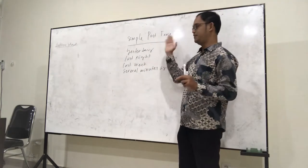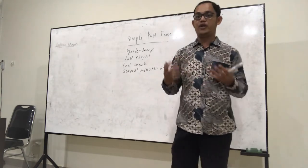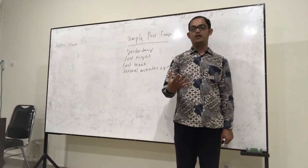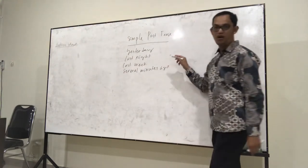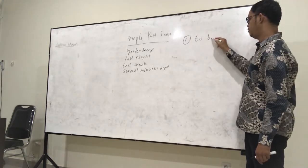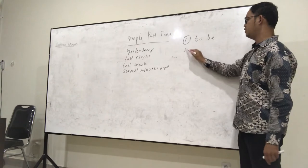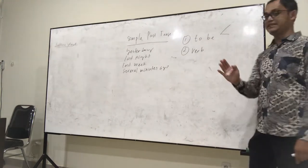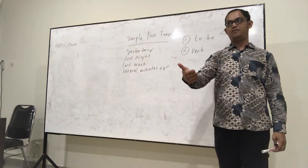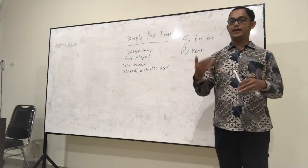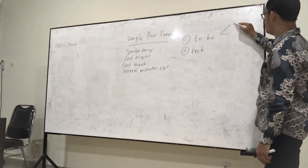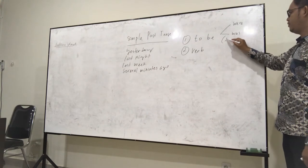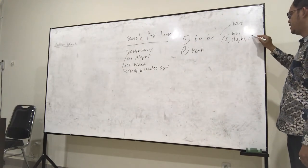Now, how can we use simple past tense? We have two kinds of formula. The first formula is called the to-be formula, and the second formula is called the verb formula. In the to-be formula, in simple present tense we know that we have am, is, are — but in simple past tense we have only two kinds of to-be: 'were' and 'was.' 'Was' is used for I, she, he, and also 'it'.